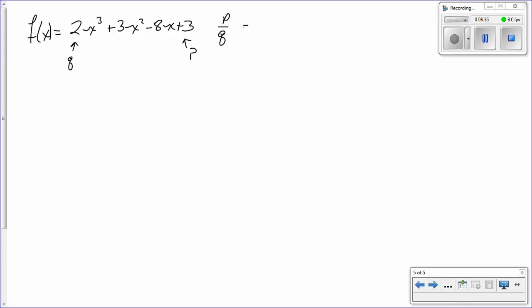So it's going to be all the factors of 3, which are plus or minus 1, and plus or minus 3, over all of our factors of 2, which is plus or minus 1, and plus or minus 2.